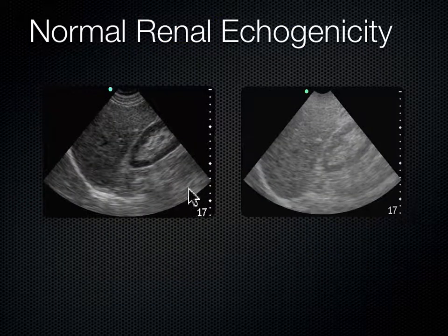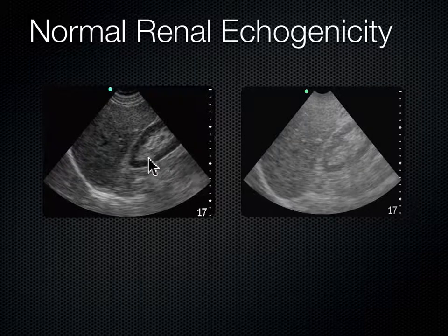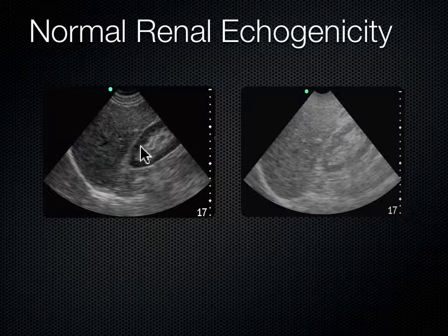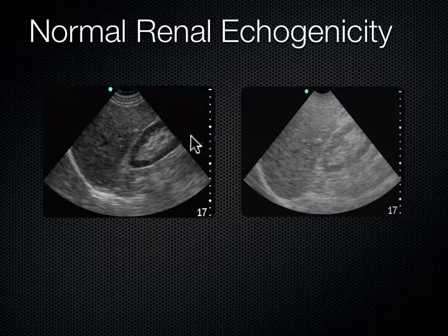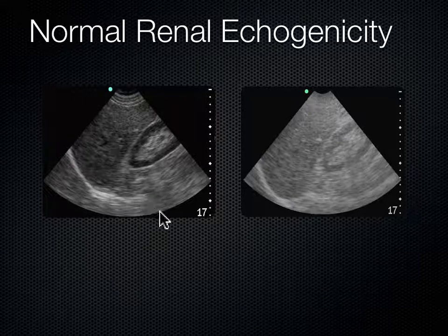Looking at these two images, both range down to 17 centimeters depth, but the difference is gain. The right image is over-gained — pretty washed out. The left image shows the cortex of the kidney as slightly darker than the liver, which is correct. If you can make out those subtleties, you've got your gain adjusted just right. Over-gaining washes things out and makes it hard to tell that the cortex is less echogenic than the liver. I know my gain is set right when my kidney cortex looks darker than the liver or spleen.